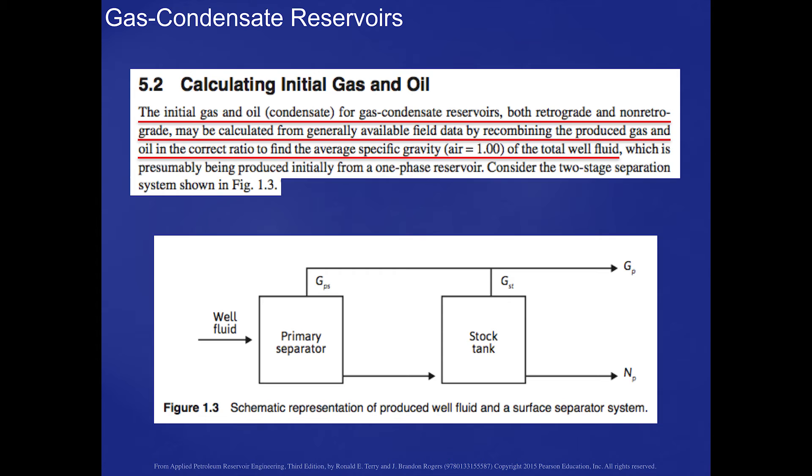The liquid off of the primary separator will go into the stock tank. And there, at standard conditions of 60 degrees Fahrenheit and 14.7 PSIA, we will flash that fluid and we will generate a gas and a liquid phase.